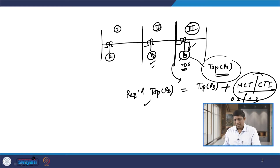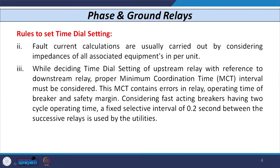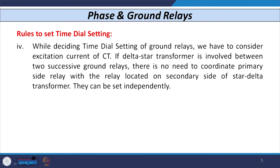We then decide the time of operation of relay R2, and similarly we decide the time of operation of relay R1. The next rule is that while deciding the time dial setting of a ground relay, we need to consider the excitation current of the CT. However, when we consider two successive ground relays and there is a star-delta transformer involved between them, there is no need to consider any such rule.